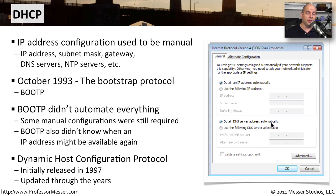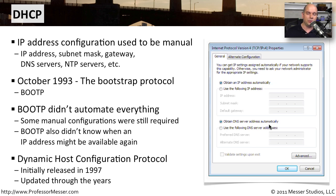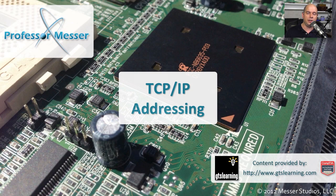To tell if your computer is set up for automated DHCP, look at the IP address configuration of your machine. You can see a section where you could manually type in the IP address, subnet mask, default gateway, and DNS server information. But if you simply check 'obtain an IP address automatically' or 'obtain a DNS server address automatically,' that means DHCP is being used. Your workstation, when it hits the network, will send a broadcast looking for a DHCP server, which will then assign the IP address to your machine automatically.